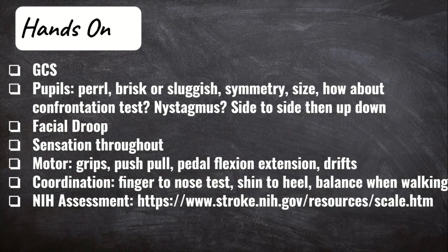Now let's go over how I perform my assessment. For every neuro patient — and perhaps every single patient — you're going to need a GCS score; I have a separate video on that. From top to bottom, I'll start with the pupils. Are they equal, round, and reactive to light? Is the reactivity brisk or sluggish? Are their pupils pinpoint or dilated? What about symmetry — are they different shapes or sizes from each other?